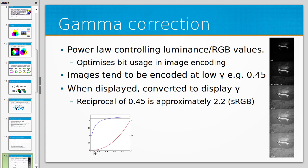To encode with gamma, you apply the power-law transform, which loses a little information. Then to display it, they perform the inverse operation to get back to a more linear display for your screen. This is important to know because if you do any sort of colour correction, you can end up losing information through this kind of transformation.